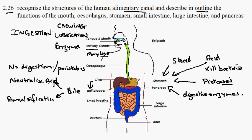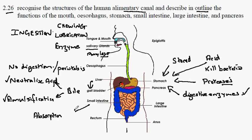So food leaves the stomach, it is neutralized and emulsified, and the digestion is completed by digestive enzymes from the pancreas, so that the function of the small intestine is the absorption of digested food into the blood.